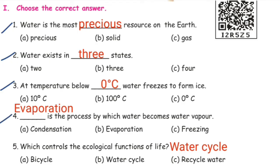Fourth one: dash is the process by which water becomes water vapor. Options: condensation, evaporation, freezing. Answer: evaporation. Evaporation is the process by which water becomes water vapor.